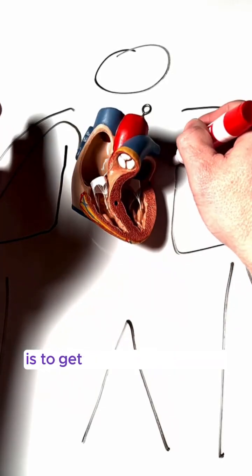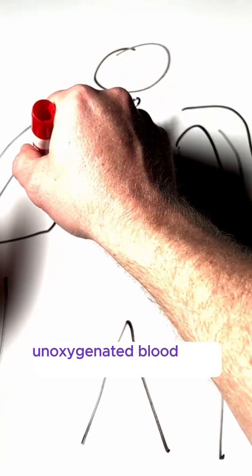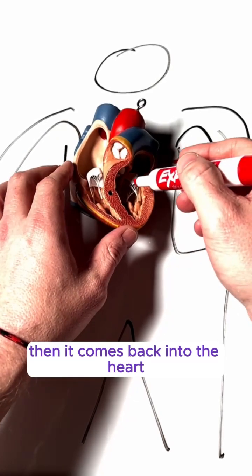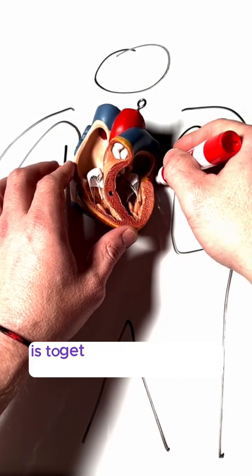The job of the right side of the heart is to get unoxygenated blood from the body into the lung so it can become oxygenated, then it comes back into the heart. And the left side of the heart is to get blood out into the body.